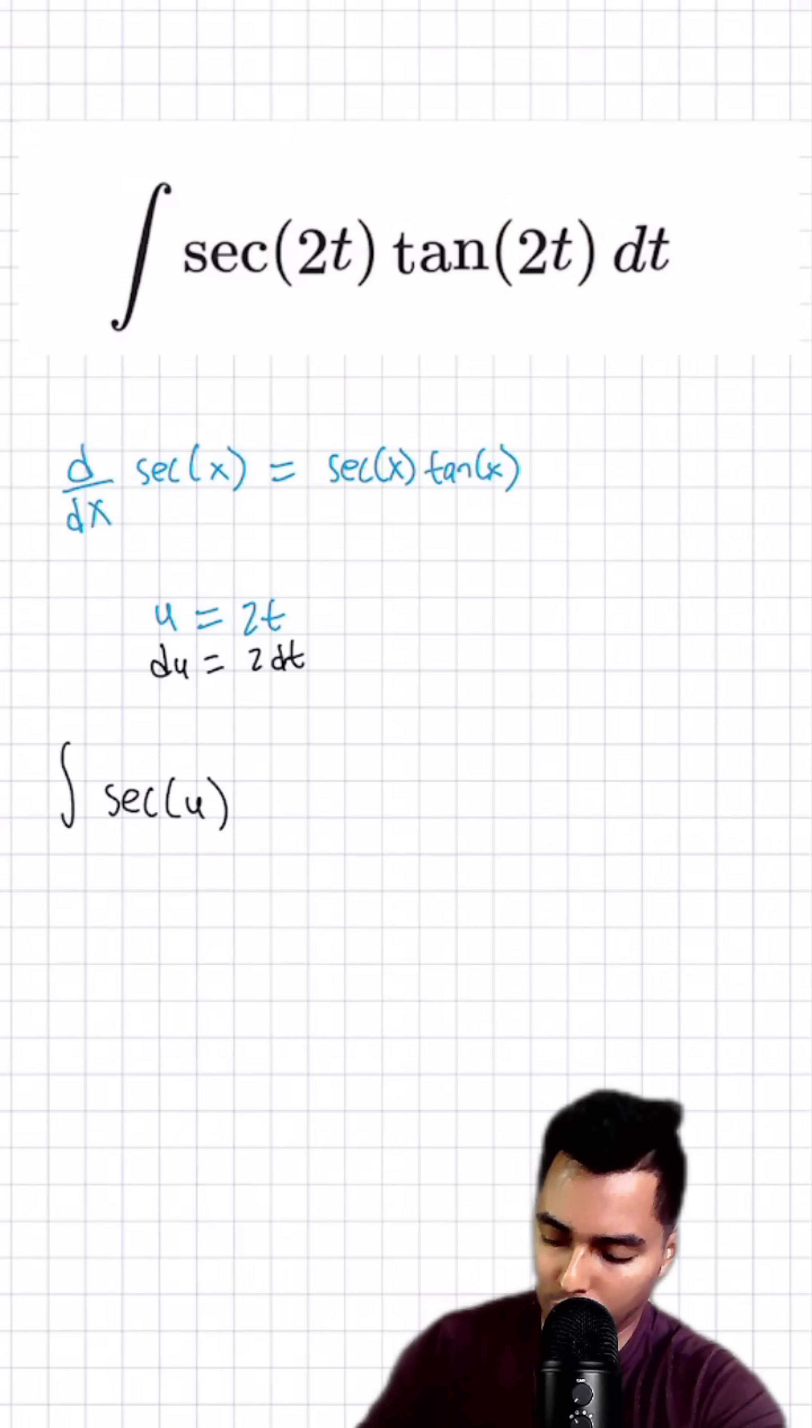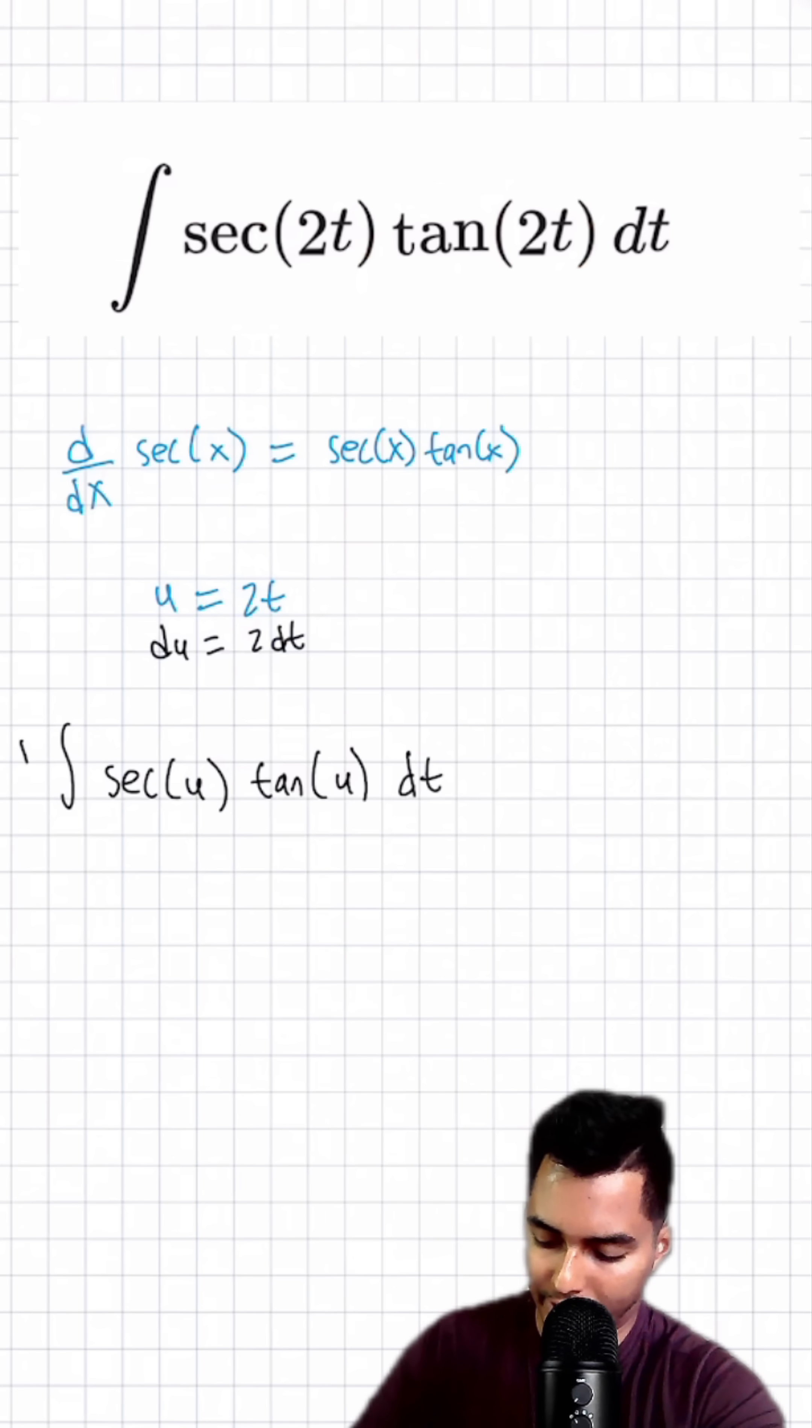We're going to have secant of u, which is our 2t, times tangent of u times dt. I'm going to tack on a one half on the outside here because this is how we evaluate our dt term.